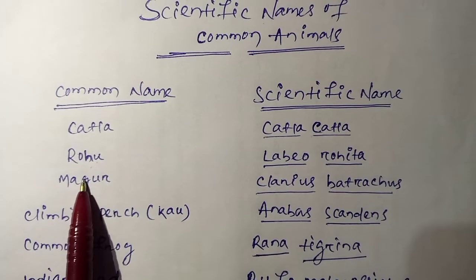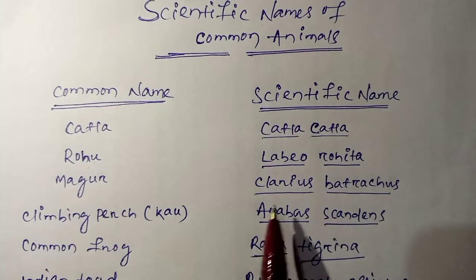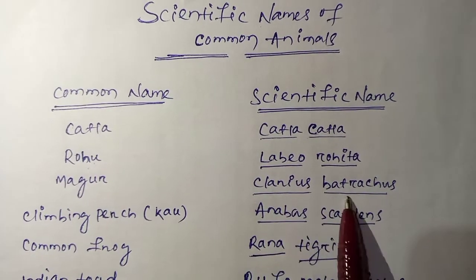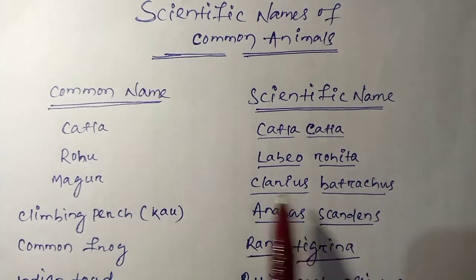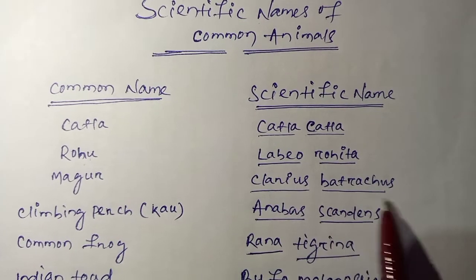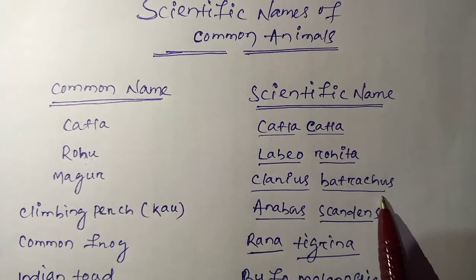Next is Magur. The scientific name is Clarias batrachus. Clarias is the genus name and batrachus is the species name.